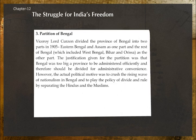Partition of Bengal: Viceroy Lord Curzon divided the province of Bengal into two parts in 1905 — Eastern Bengal and Assam as one part, and the rest of Bengal including West Bengal, Bihar, and Orissa as the other. The justification was that Bengal was too large to administer efficiently. However, the actual political motive was to crush the rising wave of nationalism and to pursue a divide-and-rule policy by separating the Hindus and the Muslims.